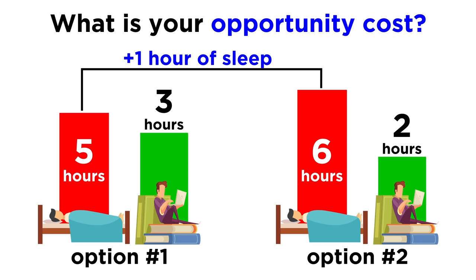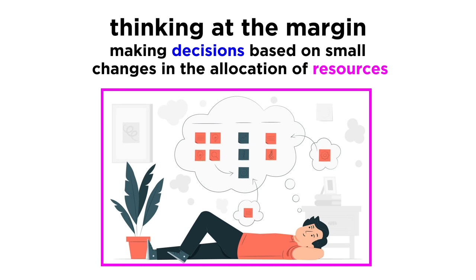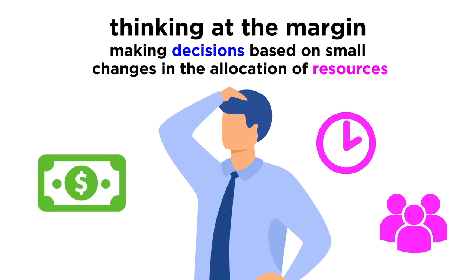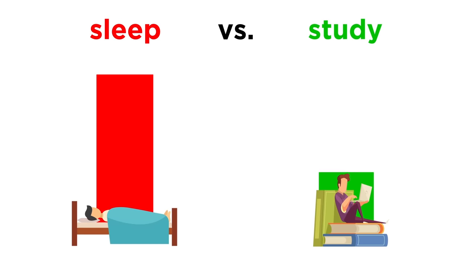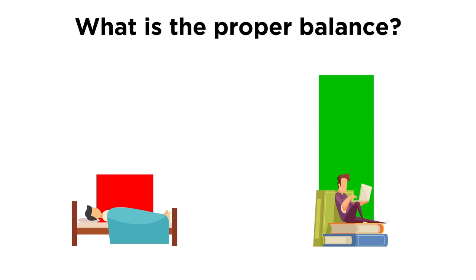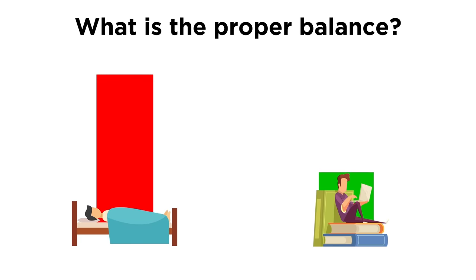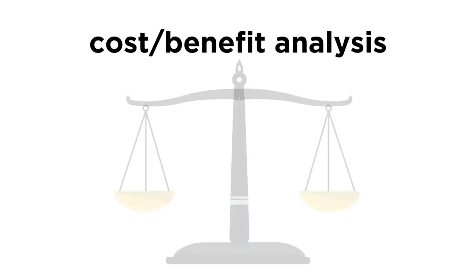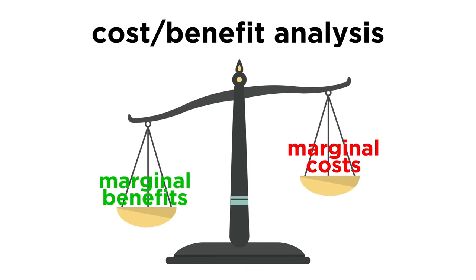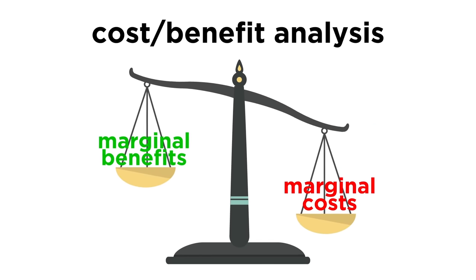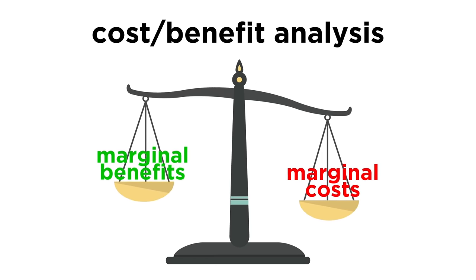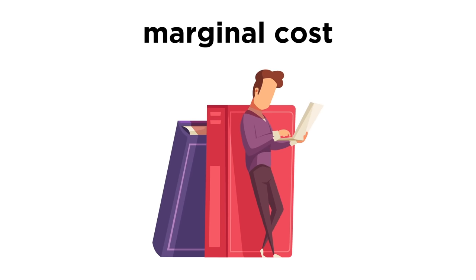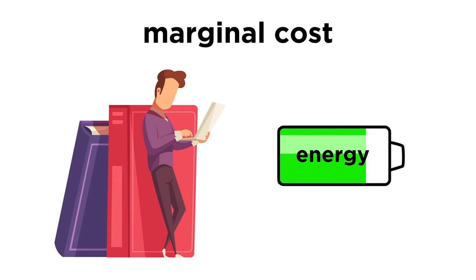This ranking of choices leads to the idea of thinking at the margin. Thinking at the margin has to do with making decisions based on small changes in the allocation of resources — deciding how much more or how much less to do something, with all else held equal. Looking at the sleep versus studying example, you'd be thinking at the margin if you thought about what is the proper balance of sleeping versus studying in order to best prepare for the test. The process of making a decision like this is sometimes called a cost-benefit analysis. To make rational choices, we weigh marginal costs versus marginal benefits — terms that refer to either the cost added or benefit gained associated with one additional unit of a good or service.